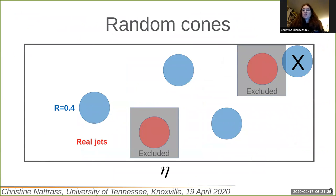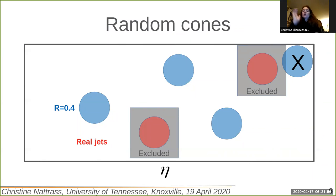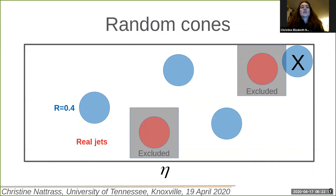When you draw random cones in the event, you would expect that the random cones are totally unrelated to a hard scattering. So you take the momentum in these random cones, add it all up, and subtract off this estimated background density. You should expect to see on average nothing, but you can look at the fluctuations to see if you understand the background fluctuations in the event. Another thing done in most studies is that you exclude the area around jets — you find the one or two leading jets in the event and draw a box around them slightly larger than the jet, because we know jets extend beyond the resolution parameter. So a particular jet would be excluded if it's too close to a random cone.